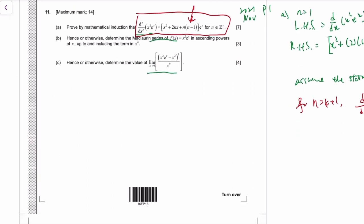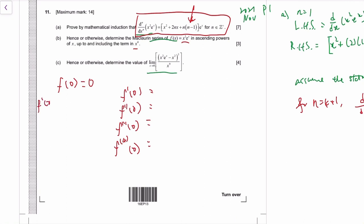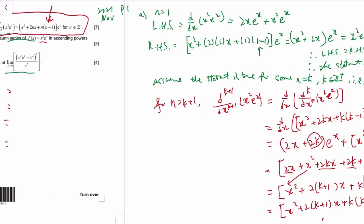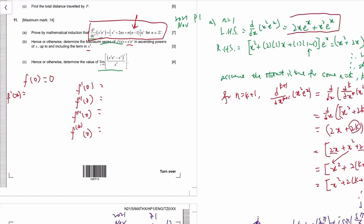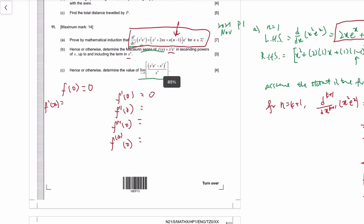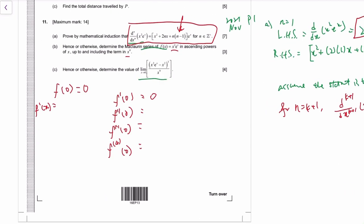Now we can use this result to form the Maclaurin series up to the fourth power. To find the Maclaurin series we need f(0), f'(0), f''(0), f'''(0), and the fourth derivative at zero. f(0) is just plugging zero in — that gives zero. The first derivative at zero also gives zero.